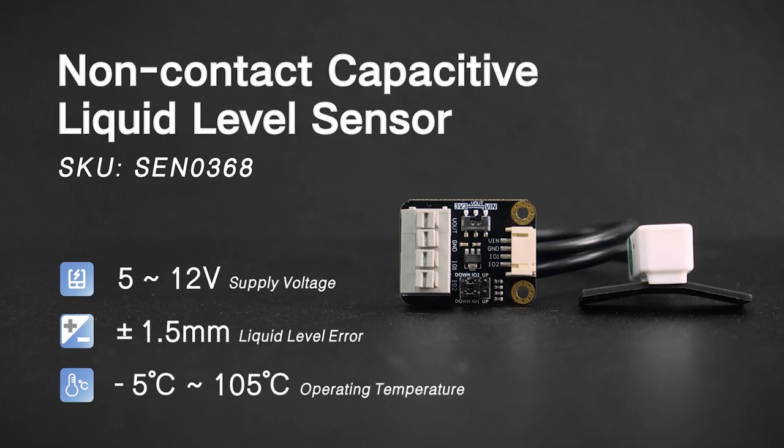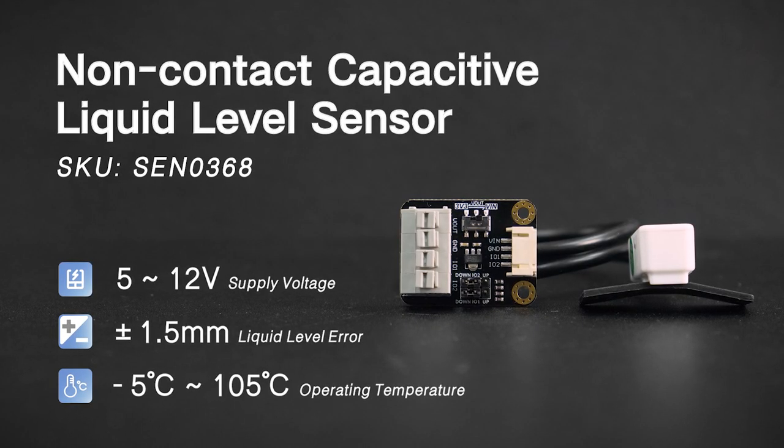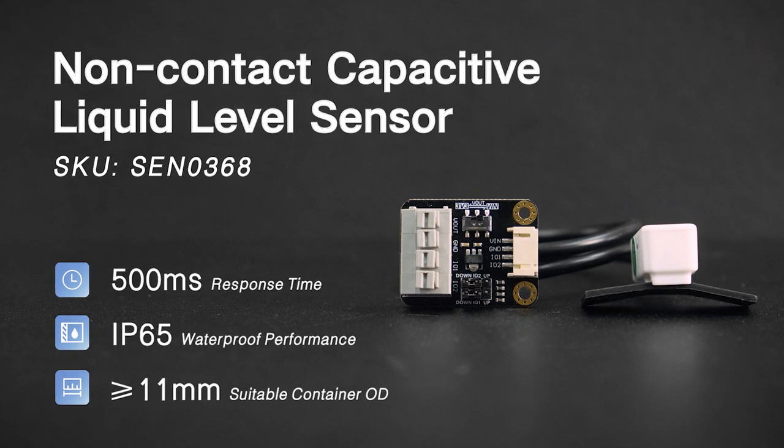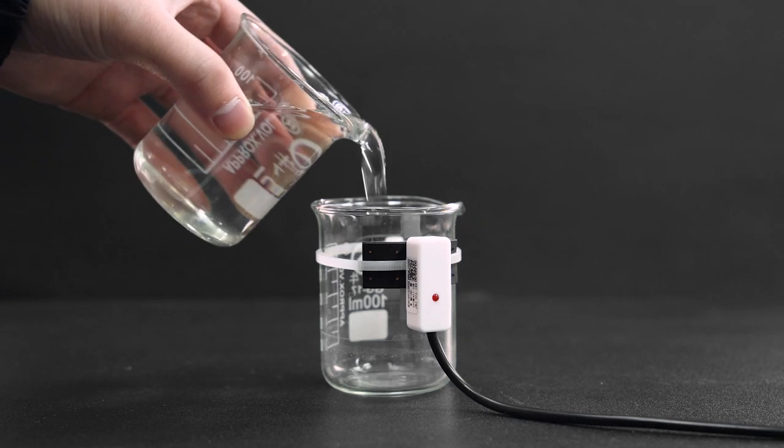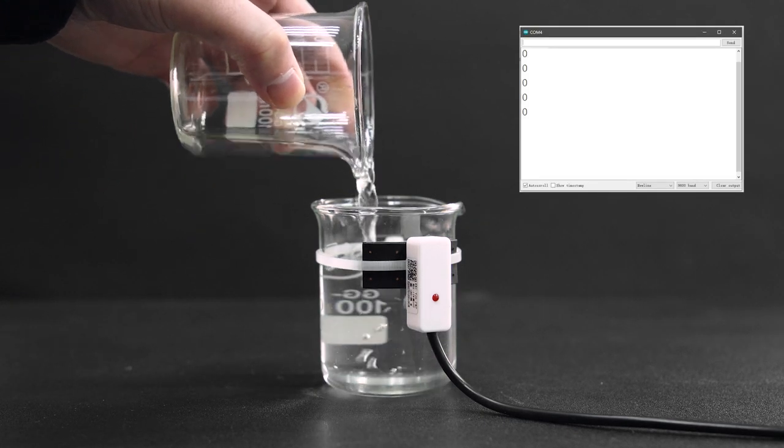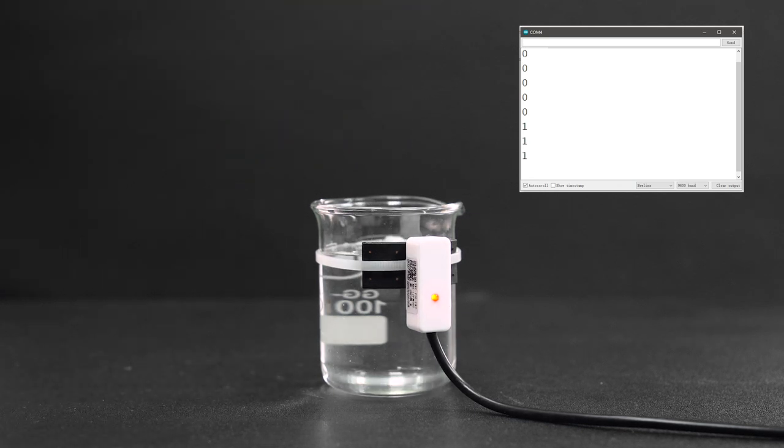This DFRobot capacitive liquid level sensor is an example of detecting liquid level by dielectric medium change. When no liquid is detected, the capacitance stays at a fixed value. Otherwise, it shifts with medium changes.